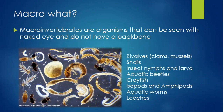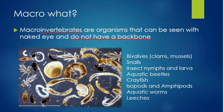Let's break down the word macroinvertebrate. First, 'macro' means it can be seen with the naked eye, and 'invert' means it does not have a backbone. So together, a macroinvertebrate is an organism that can be seen with the naked eye and does not have a backbone.